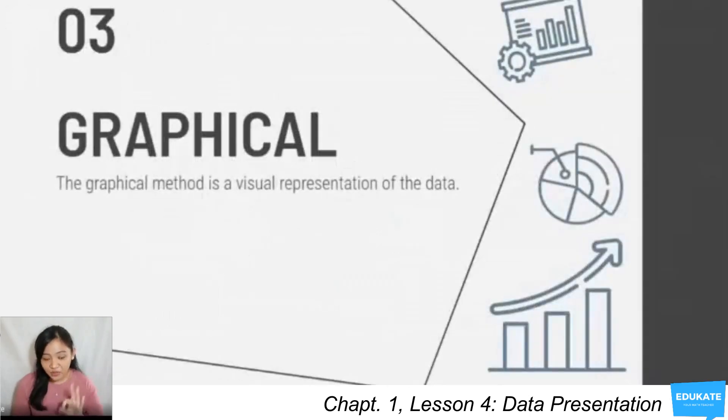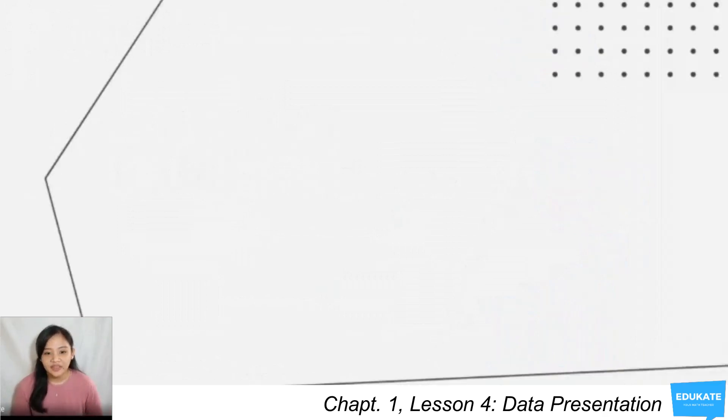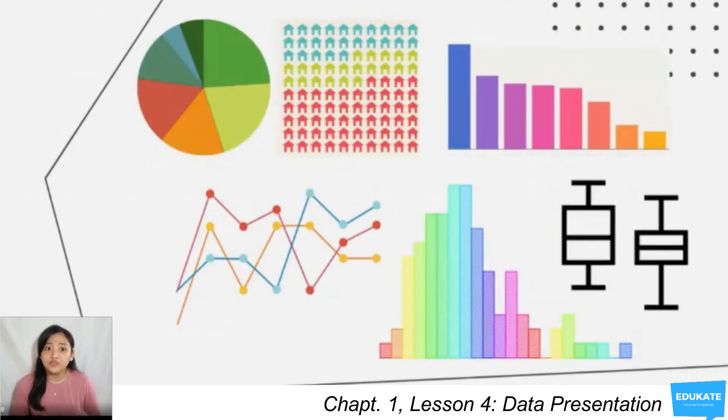You have the last one, which is graphical. The graphical method is a visual representation of the data. Now, you are familiar with some of these graphs: pie graph, bar graph, line graph. There are several forms of graphs to use. Which form to use depends on what information to be related. For example, trends across time are easily seen using a line graph. However, values of variables in nominal or ordinal levels of measurement should not be presented using a line graph. Rather, a bar graph is more appropriate.